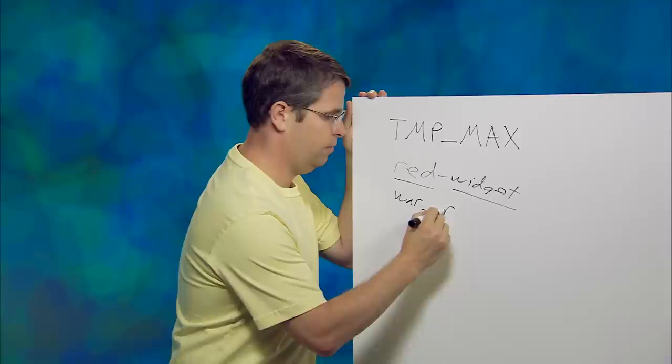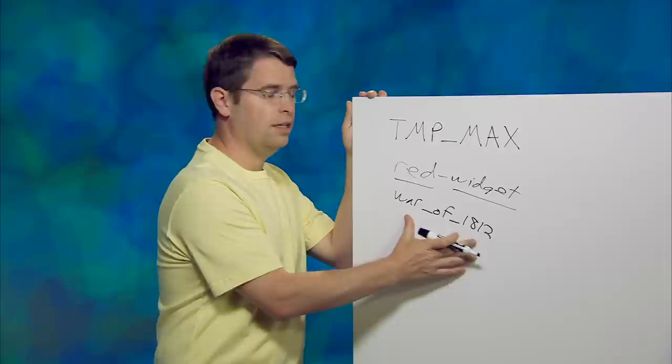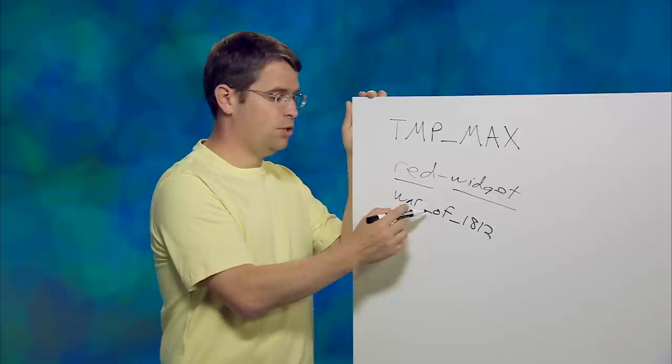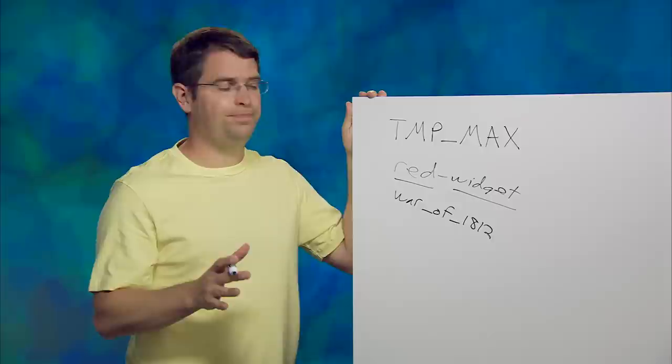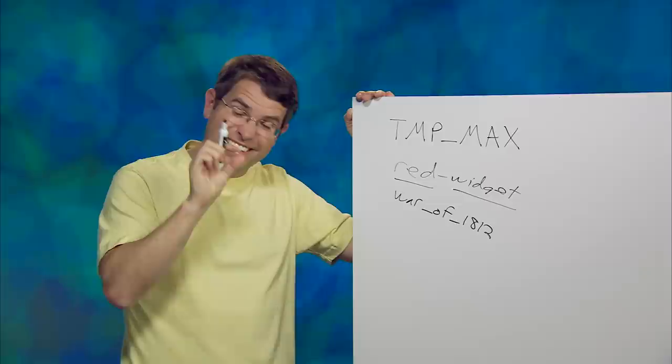Whereas, if you were to have war of 1812 with underscores, so war underscore of underscore 1812, instead of separating on the underscores, we actually glom all those together. So that's one term that you could find by searching for war underscore of underscore 1812. Seems kind of weird. So why does Google do it that way?